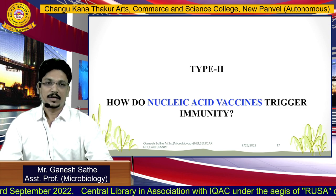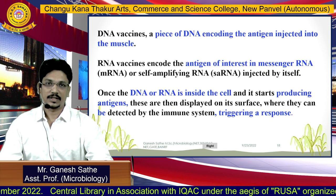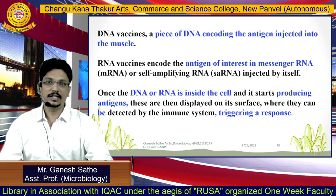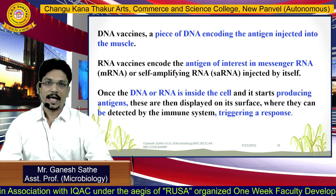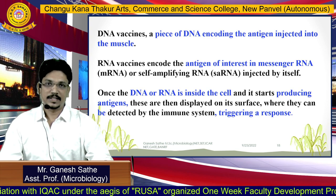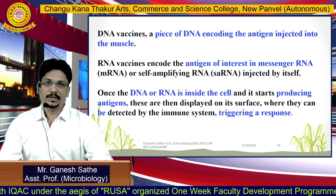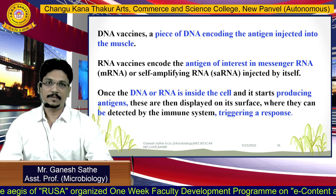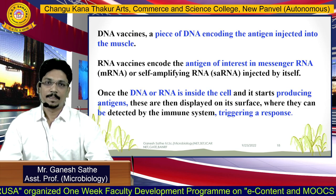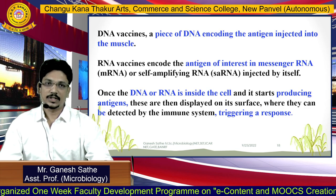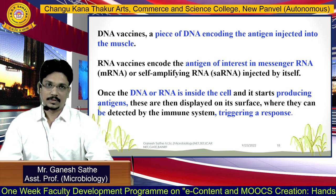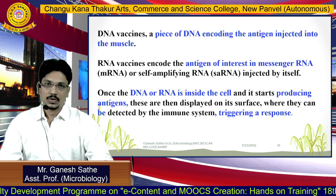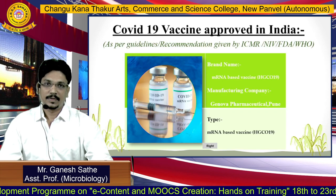Can nucleic acid vaccine trigger immunity? Yes, because here we are directly injecting either DNA or RNA as a vaccine. After injection, that DNA or RNA will get expressed and they will synthesize antigen — specifically the spike protein found on the capsomers of that virus. So they will trigger immunity against it.